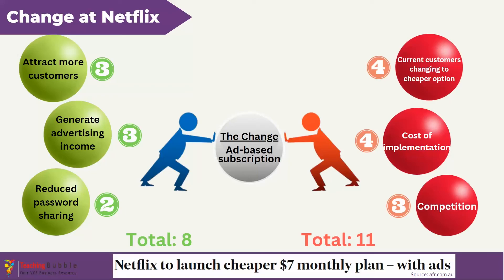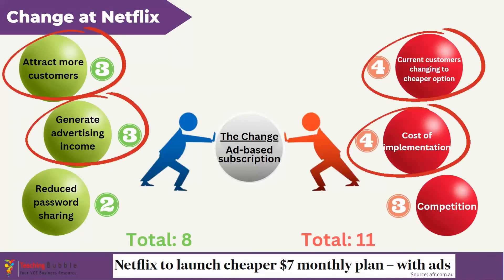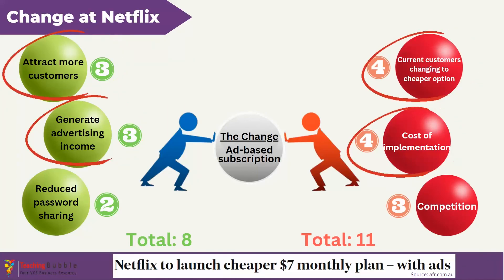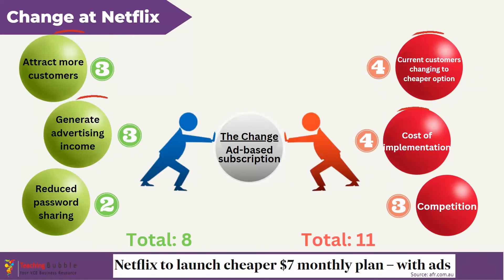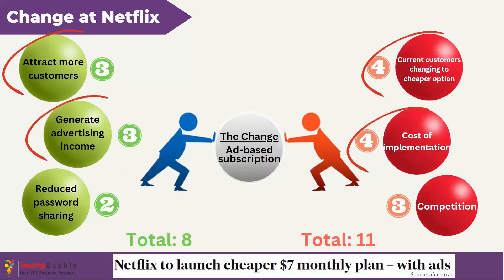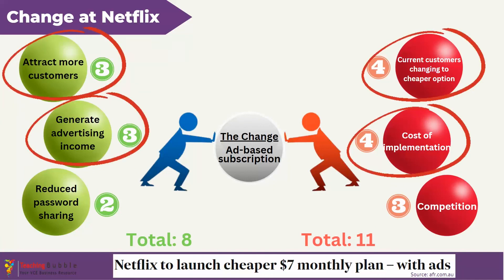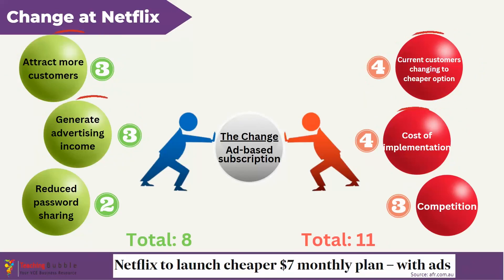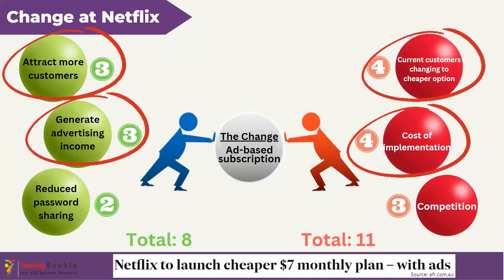The next step is to formulate a response in the form of an action plan and then act on it, so that the landscape can shift. Netflix may look to partner with Microsoft to manage the advertisement section, which could reduce implementation costs. Additionally, they might design offers to make the more expensive options more attractive so customers remain on their current plan rather than downgrading. They may also focus on marketing the new offer to new subscribers, attracting more customers, increasing revenues and generating more advertising income due to the increased viewer base.